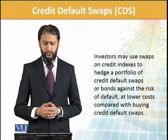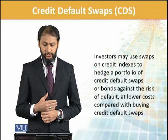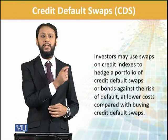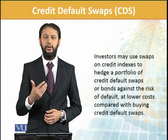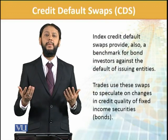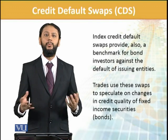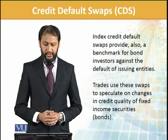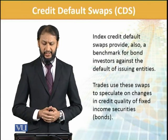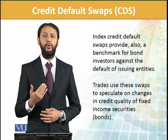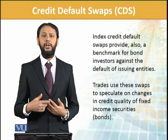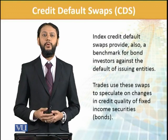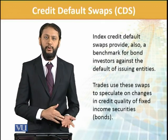Investors may use swaps on a credit index to hedge a portfolio of credit defaults — you can safeguard your entire portfolio. A portfolio-level swap is slightly cheaper than taking individual swaps one by one, which would cost you more. Just like individual life insurance is more expensive, but if you take a group pool policy it is lower. Index default swaps also provide a benchmark for bond investment against the default of issuing entities. Traders use these swaps to speculate on changes in credit quality of fixed income — it is not just hedgers who participate; if you think a company's value will fall, speculators also make positions for profits. So both hedgers and speculators are present.